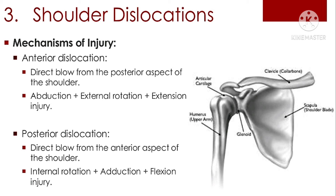Mechanism of injury — anterior dislocation: direct blow from the posterior aspect of the shoulder, or abduction, external rotation, and extension injury. Posterior dislocation: direct blow from the anterior aspect of the shoulder, or internal rotation, adduction, and flexion injury.